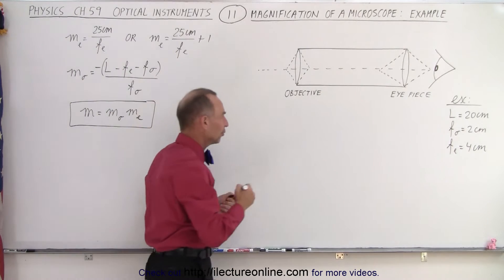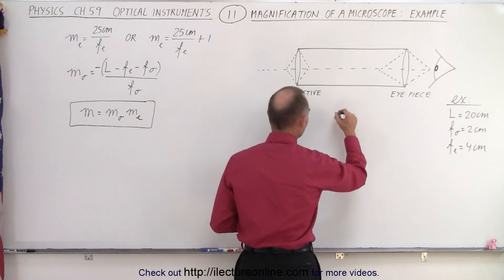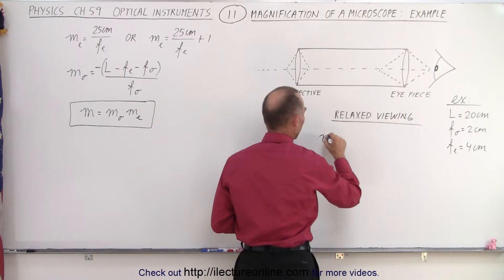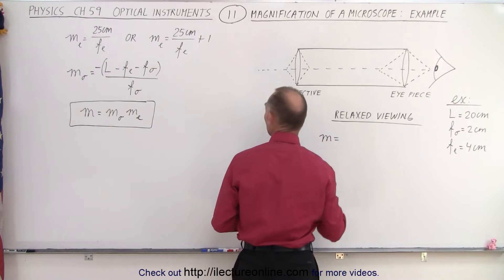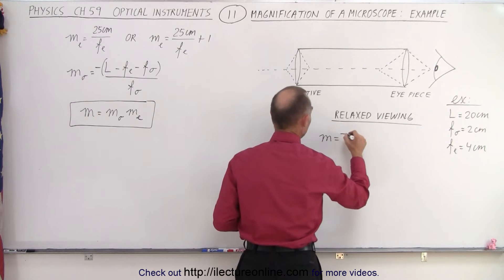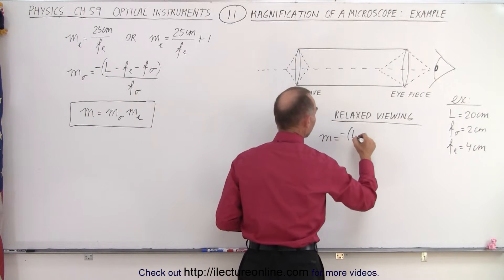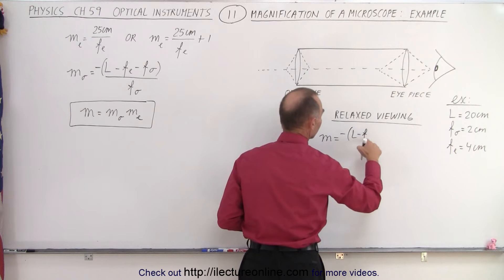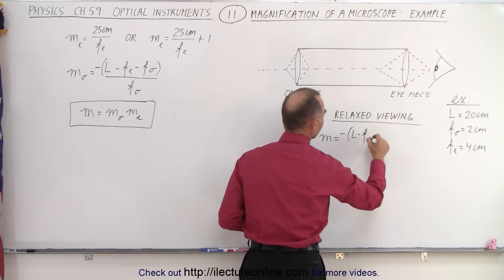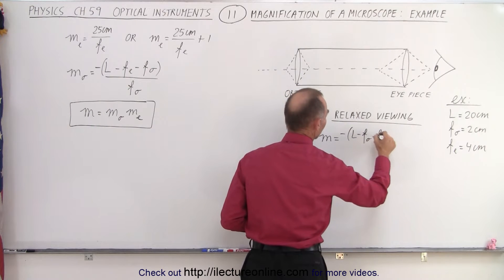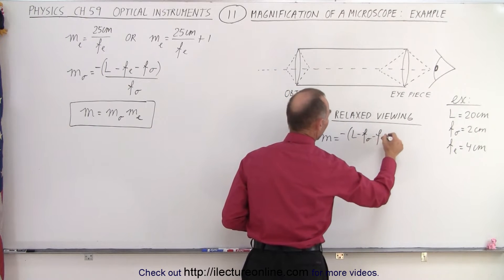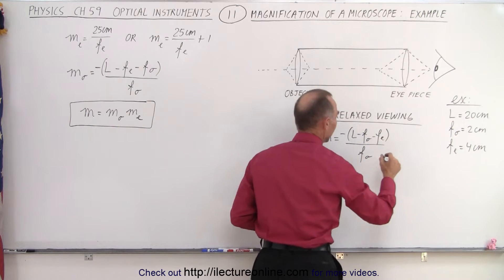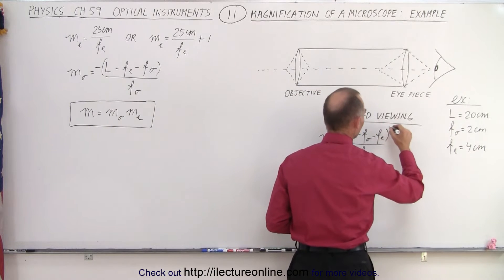Let's first do relaxed viewing. The magnification is equal to the negative of the length of the microscope minus the focal length of the objective minus the focal length of the eyepiece, all divided by the focal length of the objective.